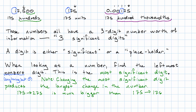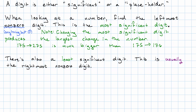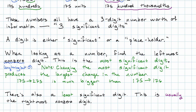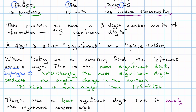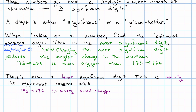There's also a least significant digit. Usually, the least significant digit is the rightmost non-zero digit — that's the case in all of these numbers. In each of them, the 5 is the least significant digit for the same reason: changing 175 to 176 is a very, very small change. But I said 'usually' — let me explain why with an example.